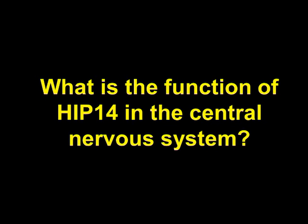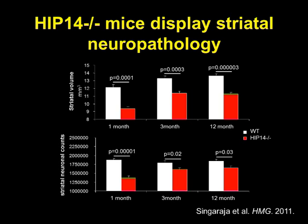We've been focusing on the role of HIP-14. We know its interaction is influenced by CAG expansion and its function in the central nervous system. Remarkably, mice with targeted disruption of HIP-14 have many features similar to Huntington disease. Most notably, they have loss of striatal volume — the characteristic selective area involved in HD — as seen here at 1, 3, and 12 months — and there is also a significant decrease in striatal neuronal counts.